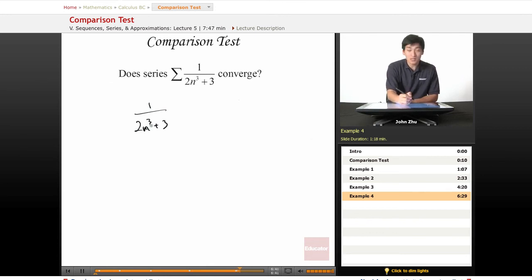So we want to compare this to a simpler term. Let's compare it to 1 over n cubed, which we can see is sort of the core of this term here without the constants.